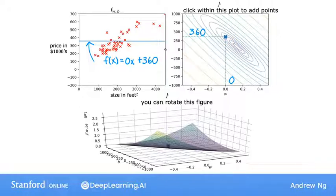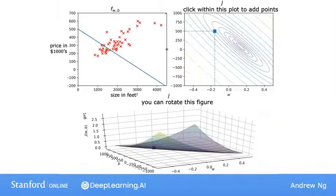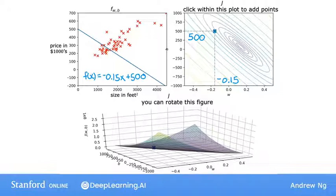Let's look at yet another example. Here's one more choice for W and B, and with these values, you end up with this line f of x. Again, not a great fit to the data. It is actually further away from the minimum compared to the previous example. And remember that the minimum is at the center of that smallest ellipse.